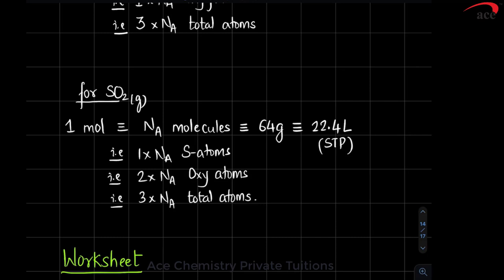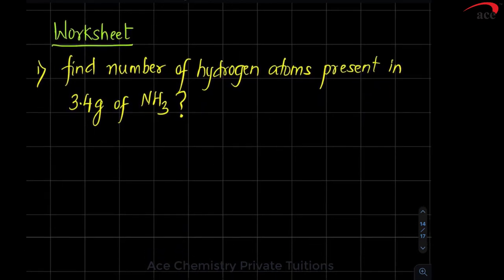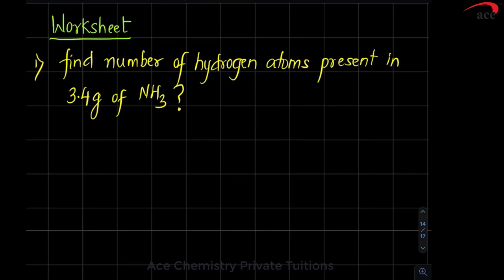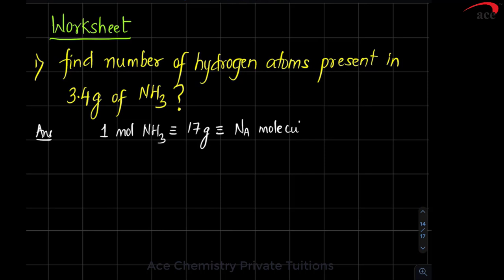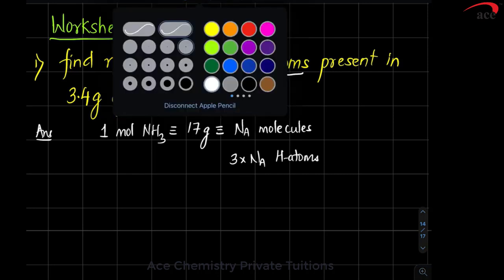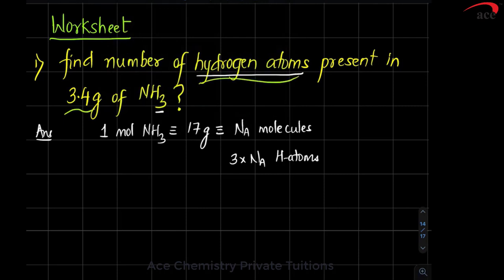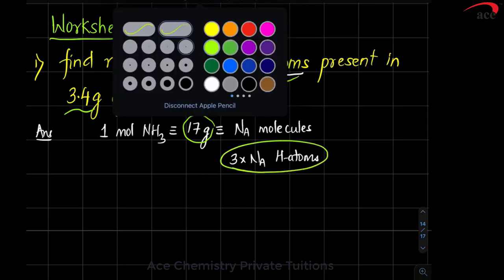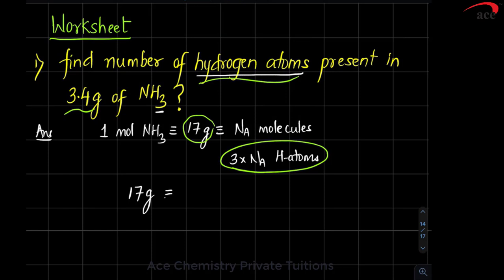Now we go to numericals based on finding the number of atoms. For example: find the number of hydrogen atoms present in 3.4 grams of ammonia. We write down one mole of ammonia is 17 grams, and 17 grams has NA molecules. We are interested in hydrogen — atomicity of hydrogen in ammonia is 3, so there are 3 × NA hydrogen atoms. To connect grams with hydrogen atoms, we pick up grams and hydrogen atoms from the equation and re-establish: 17 grams corresponds to 3 × NA hydrogen atoms.